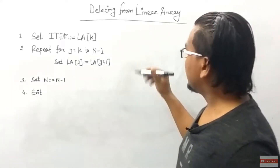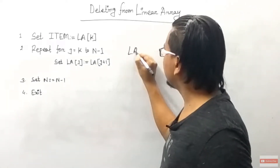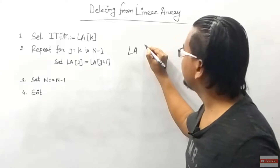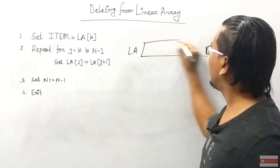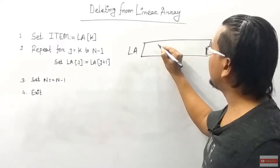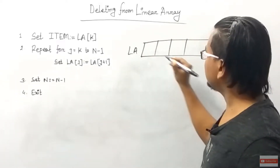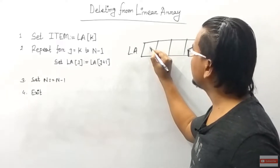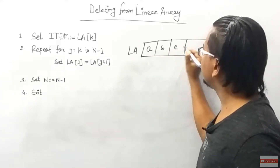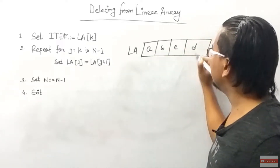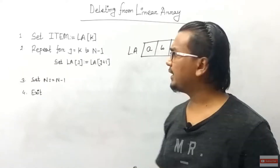Suppose a linear array is L[n]. If you look at this algorithm, suppose the elements are a, b, c, d. This is a linear array.